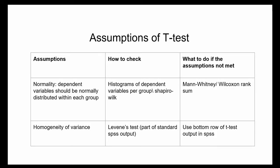Most importantly, we need to know how to detect the normality of data distribution and the homogeneity of variance. To check for normality, use histograms for the dependent variables or the Shapiro-Wilk test. For checking the homogeneity of variance, use Levene's test, as will be explained in your SPSS lectures.